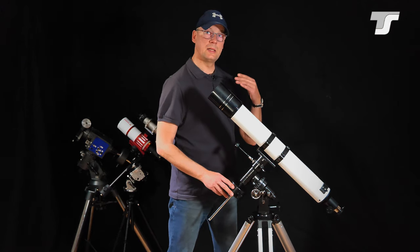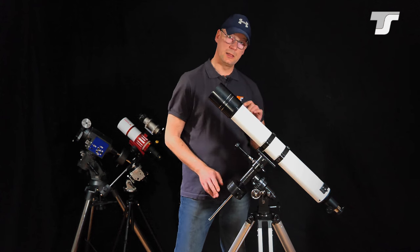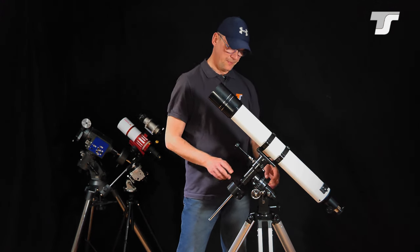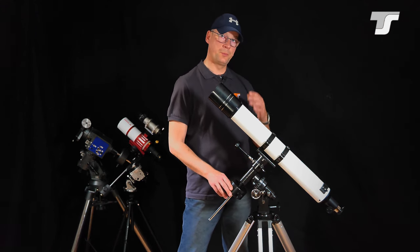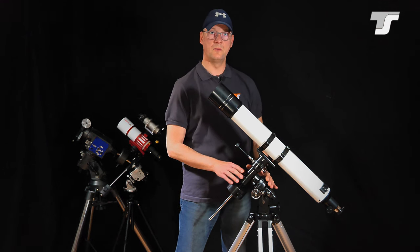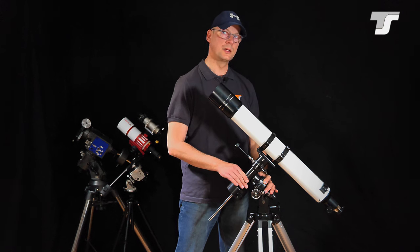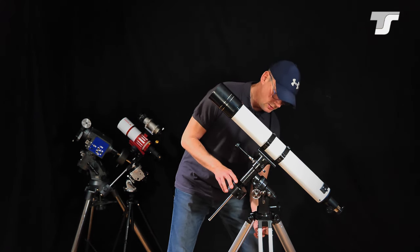More high quality mounts, the bigger ones, have a polar finder scope. It's just a little telescope which is integrated in this axis and looks through the declination axis to get it point on. This is not available with this very small EQ2 or so-called EQ3-1 class mount.